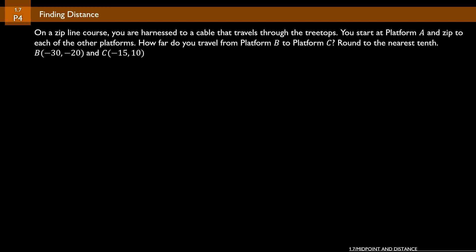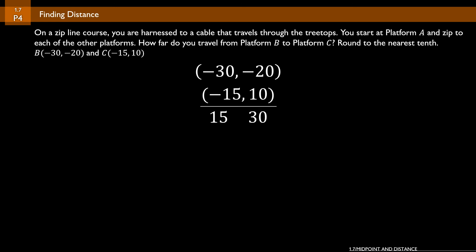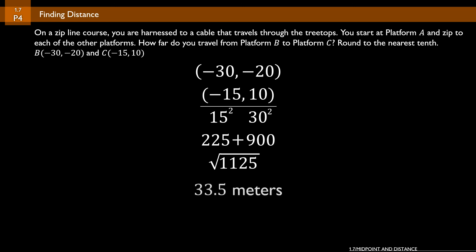Problem number 4 involves a zipline word problem. On a zipline course, you are harnessed to a cable through the treetops and zip between platforms. How far do you travel from platform B to platform C, rounded to the nearest tenth? Point B is (-30, -20) and point C is (-15, 10). Stack them: negative 30, negative 20 over negative 15, 10. Distance between negative 30 and negative 15 is 15; between negative 20 and 10 is 30. So 15 squared plus 30 squared equals 225 plus 900 equals 1125. The square root of 1125 is approximately 33.5 meters.